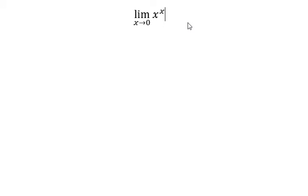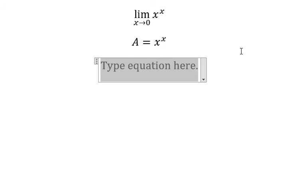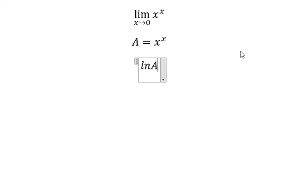We will set capital A equal to x to the power of x. Next, we will take ln A on both sides. That should equal x ln x, so we put ln A equals x ln x.